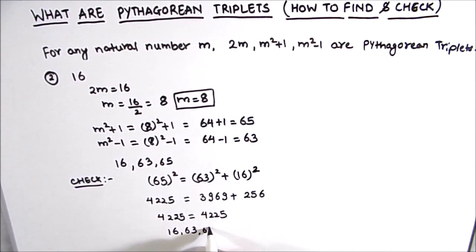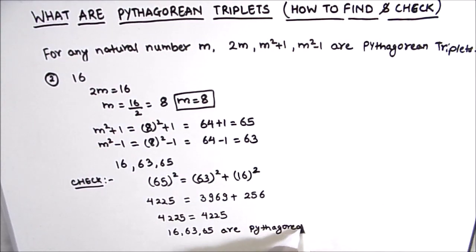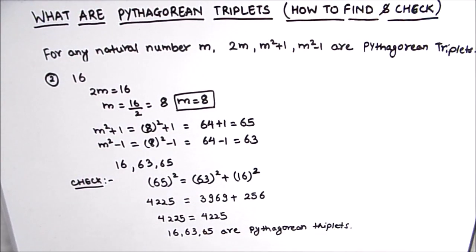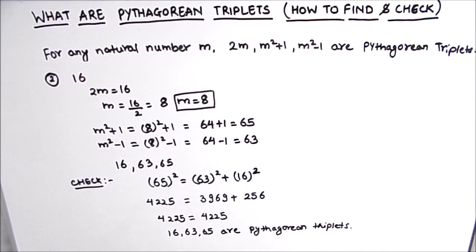The three numbers 16, 63, and 65 are Pythagorean triplets. This is how you can find Pythagorean triplets when one of the numbers is given. I hope this video is helpful to you. If you like the video, please hit the like button and subscribe to my channel for more math videos. Thanks for watching.